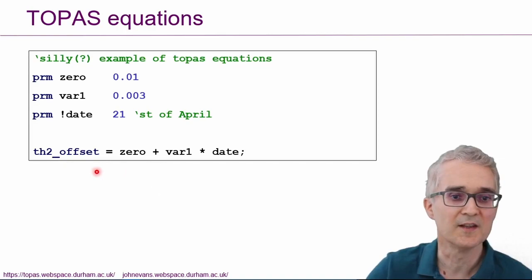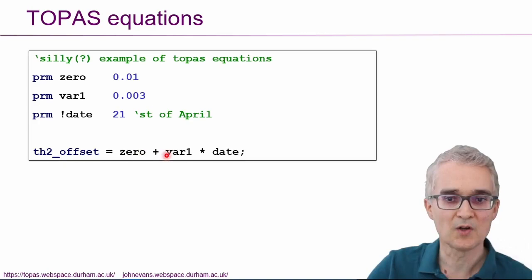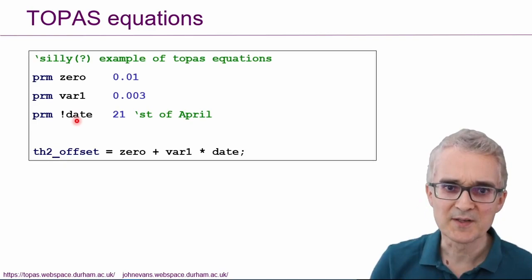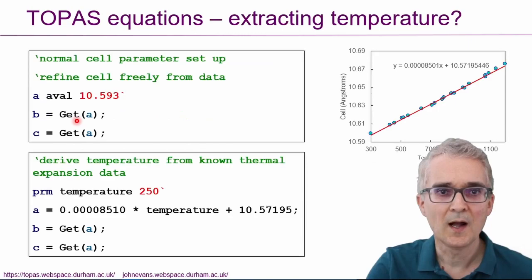So you could write a silly equation into your input file where you said that the 2θ offset was equal to the zero point error plus some constant times the day of the week. And you could even imagine setting things up so that the day of the week becomes a refinable quantity from Rietveld refinement. And that's a little bit of a silly, far-fetched example, but it's not too far-fetched.